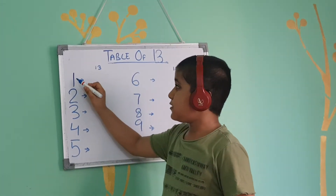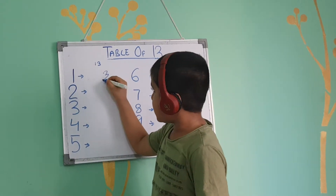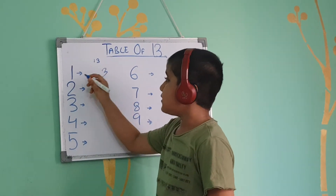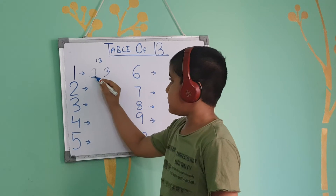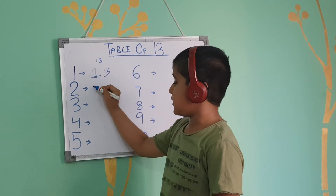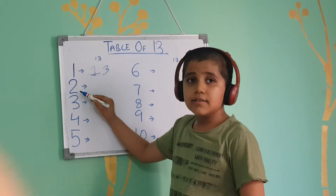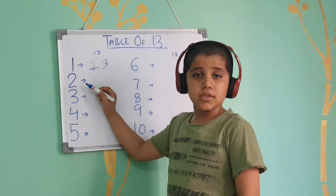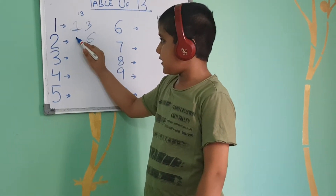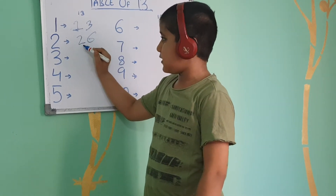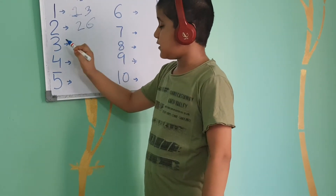So we will do 3 ones, which is 3, and we will take 1 from here, so it becomes 13. Now we will do 3 twos, which is 6, and we will take 2 from here, so it becomes 26.